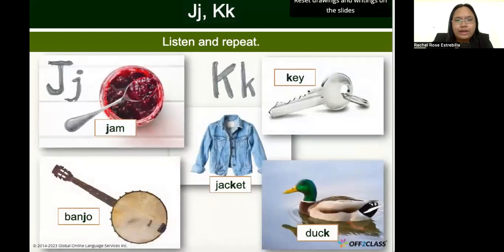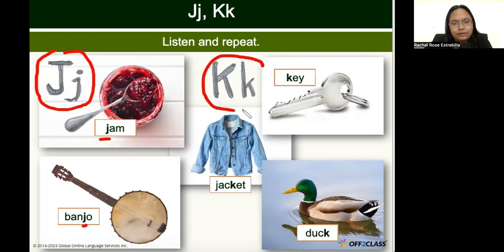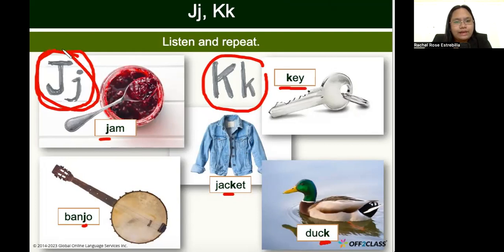Next, the letter J. J says 'j, j, j' — as in jam at the beginning, and 'j' in the middle of 'banjo.' And we have the letter K. The letter K says 'k, k, k' — just like the C sound — for 'key' at the beginning, in the middle of 'jacket,' and at the end of 'duck.' The letter J says 'j' and the letter K says 'k.'